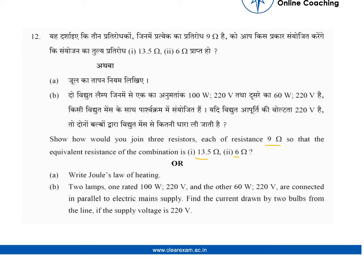The second part says that we have to explain Joule's law and this numerical in which we have two bulbs rated 100 watt 220 volt and 60 watt 220 volt and they are connected in parallel. So we have to find the current drawn in each bulb. Let us move to the solution.